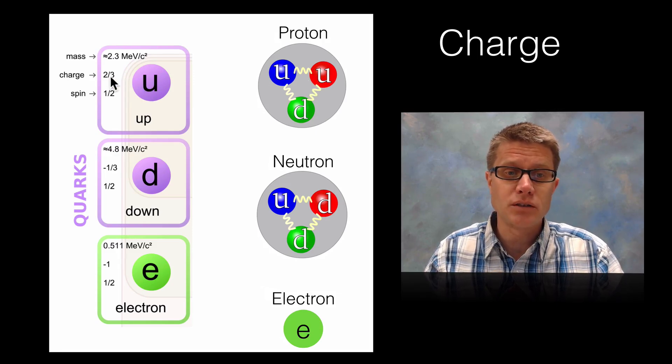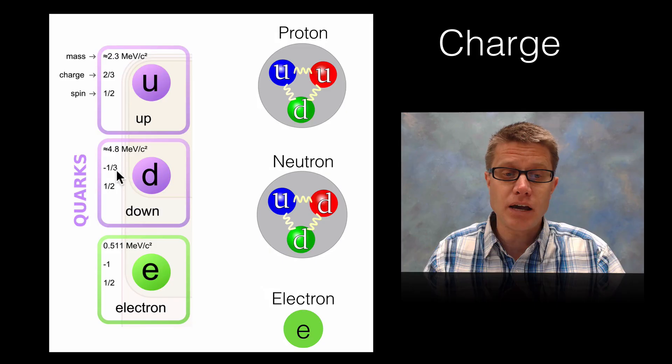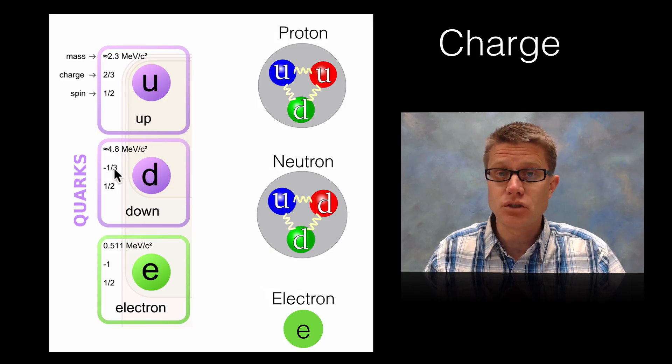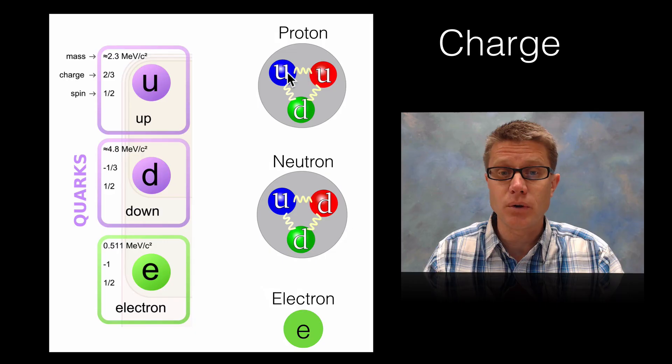The charge of an up quark is 2 thirds the charge of an electron. And so it is 2 thirds positive charge. A down is negative 1 third charge of an electron. So if we want to figure out the overall charge of a proton what do we do? Well let's add up the charge of those two up quarks.